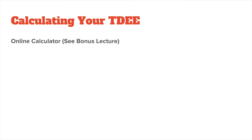The simplest method of calculating your TDEE is by using an online calculator, such as the one I linked in the bonus lecture. It will ask you for your age, weight, height, and weekly exercise. While the result will not be 100% accurate, since we all have different metabolisms and BMRs, it will give you a good idea of how many calories you need to consume in order to maintain your current weight.